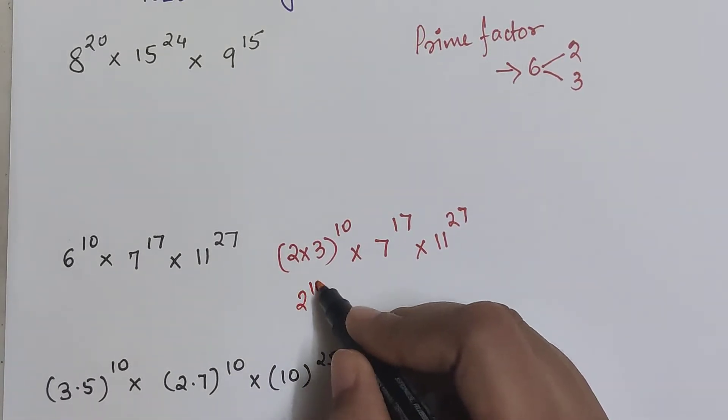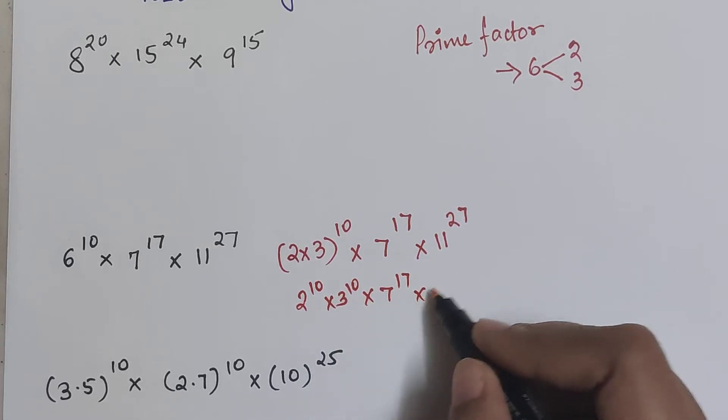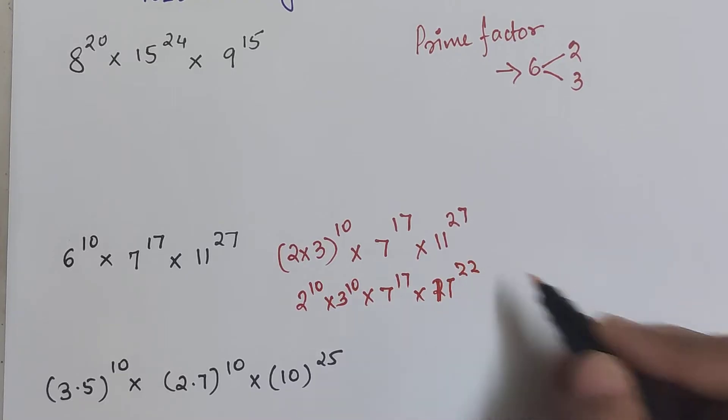So this can now change to 2 raised to 10 into 3 raised to 10 into 7 raised to 17 into 11 raised to 27.